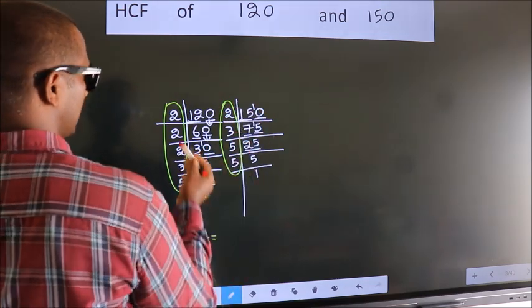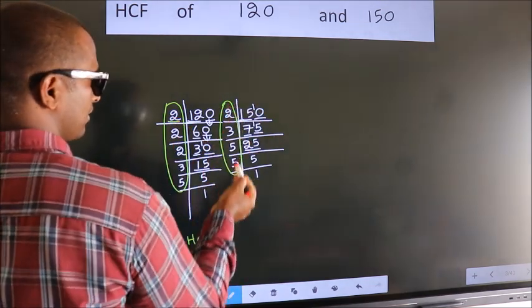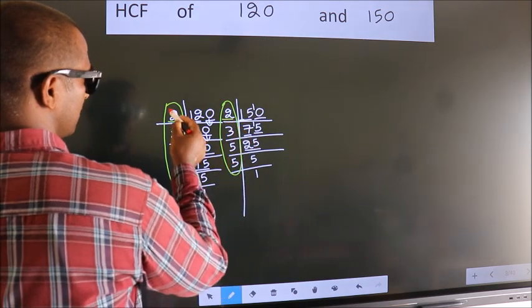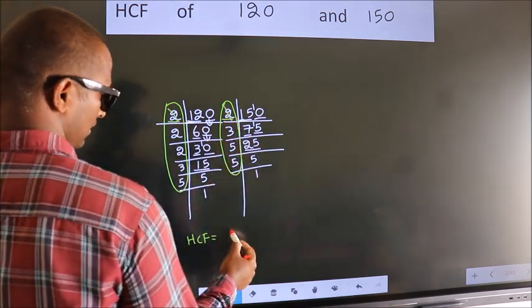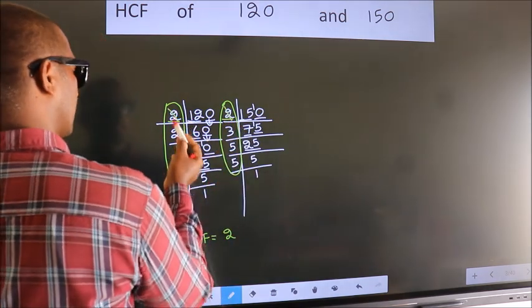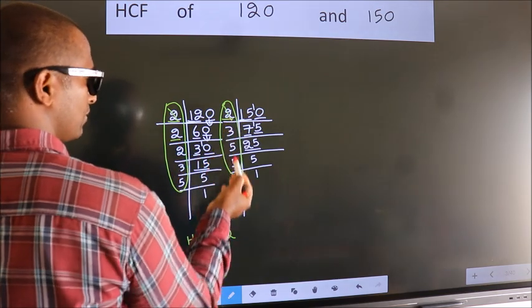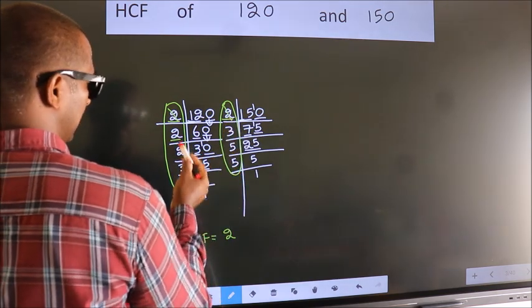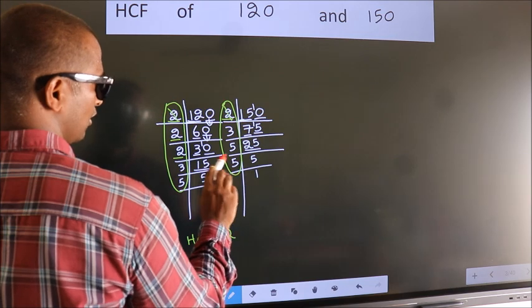Starting with the number 2. Do we have 2 here? Yes. So cut 2 right here. Next number 2. Do we have 2 here? No. Next number 2. Do we have 2 here? No.